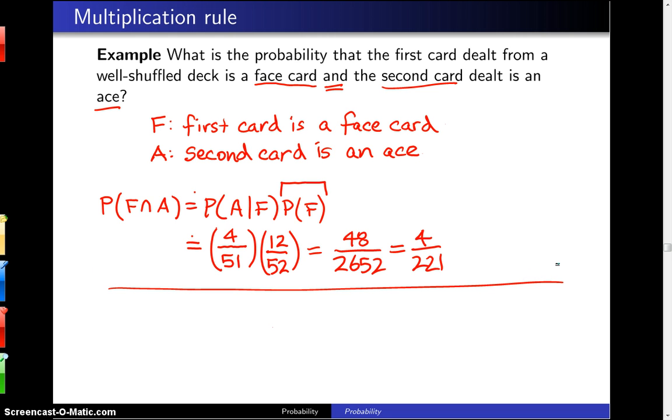One last thing: this can also be done by the multiplication rule. If you want to calculate F intersect A, in the denominator we have all of the different ways of drawing two cards from a well-shuffled deck, taking order into consideration. 52 times 51 is the number of ways to do that. That order has to be reflected in the numerator, and in this case we have 12 choices on the first draw and 4 choices on the second draw. This gives us exactly the same probability, which is 48 divided by 2652, which is also 4 over 221.